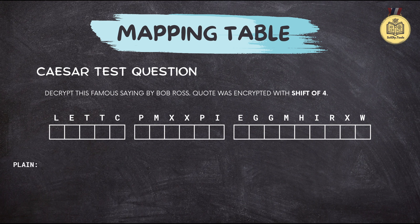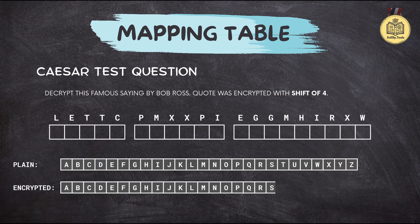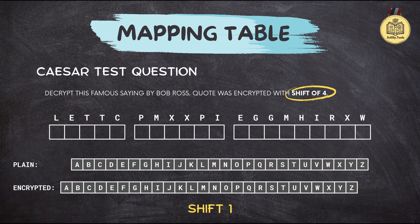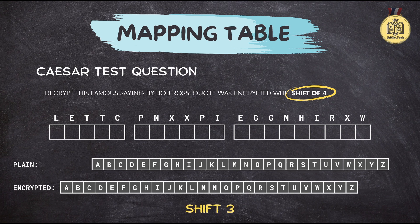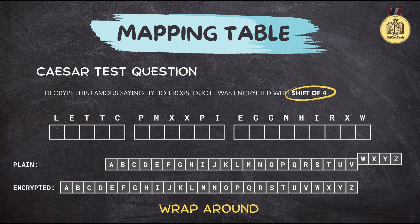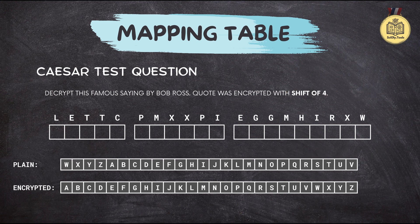Imagine two alphabets lined up. The first one is just your regular ABCs. The second one is shifted over a certain number of places — that's the key to the cipher. It's like those decoder rings but laid out flat. And the best part: no complicated calculations. Once you've got the table set up, you're good to go. Just look up the letters and match them.